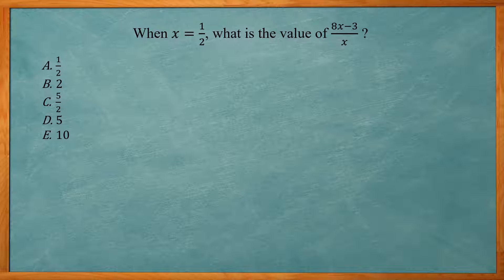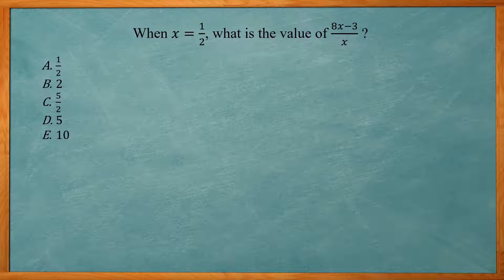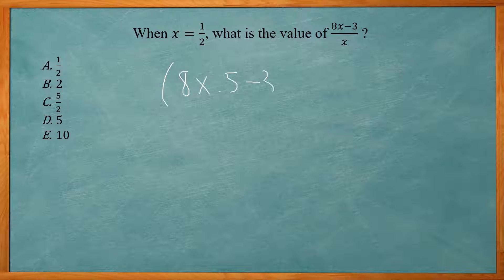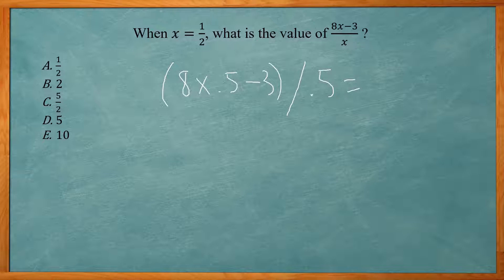This one says when x equals 1/2, what is the value of 8x minus 3 divided by x? Again, I'm just going to use the calculator and replace x with 1/2. Remember when you have a fraction with a top and bottom, I want to put those separately in parentheses. I know 1/2 is 0.5, so I'm going to do parentheses 8 times 0.5 minus 3, close parentheses, divided by 0.5. Press enter — that gives me 2. Answer choice B.